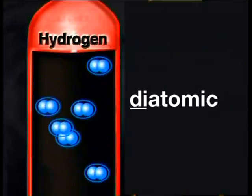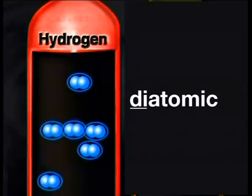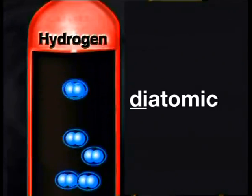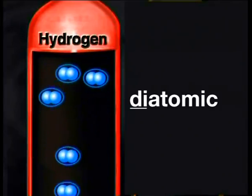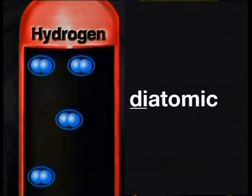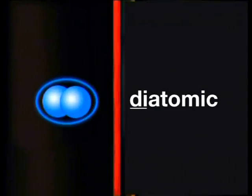Hydrogen gas is always found in this form. The element is never found as single atoms, but always in pairs of hydrogen atoms. We call this a diatomic molecule. The prefix di- means two.